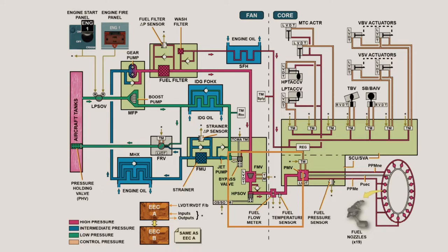The EC opens the FME and lets the fuel flow to the HPSOV which also opens when the pressure is enough and sends fuel to the SCU-SVA unit via the fuel flow meter and the fuel temperature sensor.